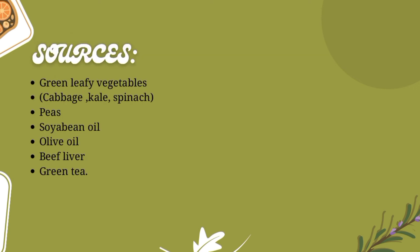The sources of Vitamin K are green leafy vegetables, which are also a rich source of iron. These include cabbage, spinach, and kale. Also peas, soybean oil, olive oil, beef liver, and green tea are good sources.